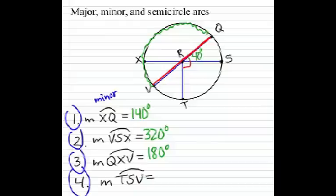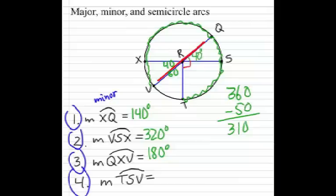Number four, the measure of arc TSV. Again, three letters to denote a major arc. So if this angle in here is 40, then this would have to be 50. Notice how it's the other part of the right angle. So we have 360, take away the 50 degrees, and that gives us 310. That major arc TSV is 310 degrees.